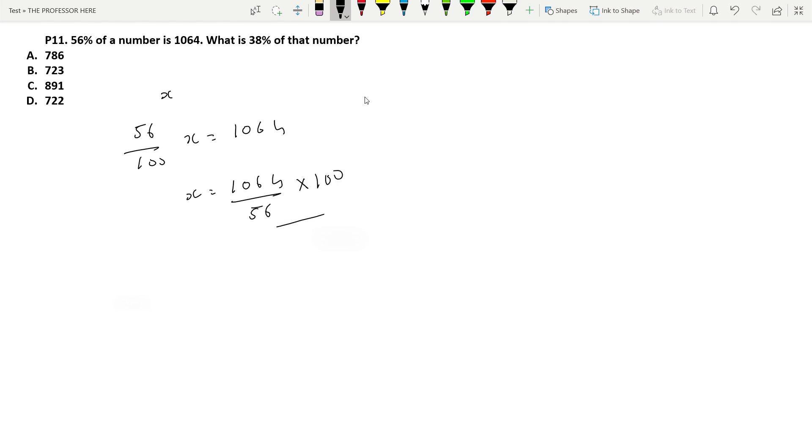The rest of the question asks us to find 38 percentage of the number, so 38 by 100. So 100, 100 get cancelled. 56 and 38: 19, 28 can divide by 4, you'll get 7, 2, 2, 6, 2, 6, 6, 2, 4, 6 divide by 7, you will get 1 and 3, 5, 6 is 8. 38 into 19, 38 into 20 is 760, so 760 minus 38 would give 722. So option D is the answer.